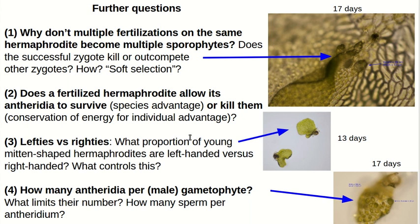The third question is: if you observe the development of your gametophytes, you'll see that in the early stages they're often asymmetric in the shape of a mitten, whereas in the later stages they take on a more symmetric cardioid shape. The question is: are the mittens that you see early on predominantly left-handed or right-handed? What's the proportion of left-handed to right-handed mittens, and what governs that proportion?